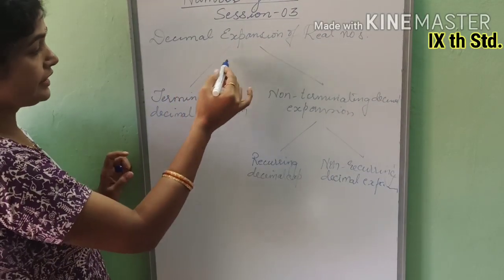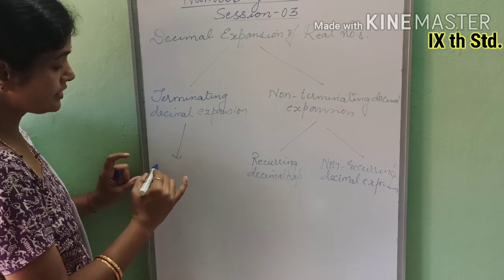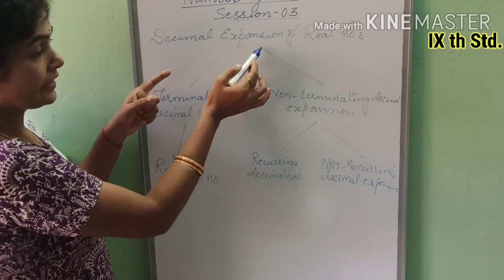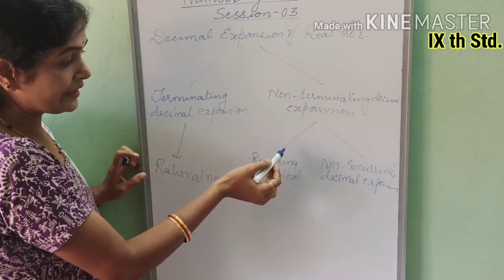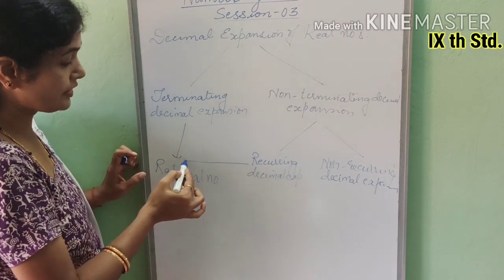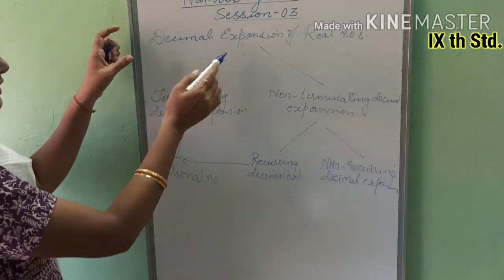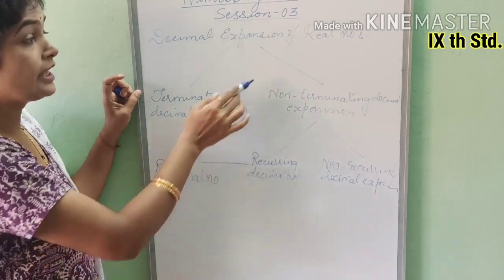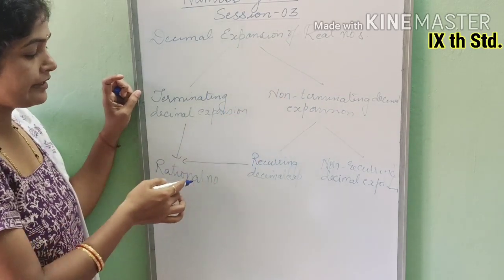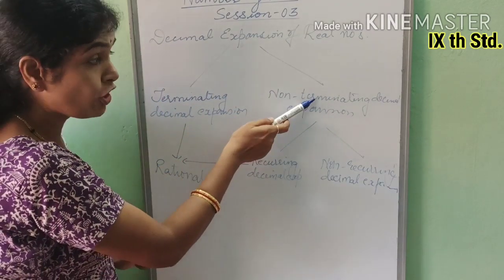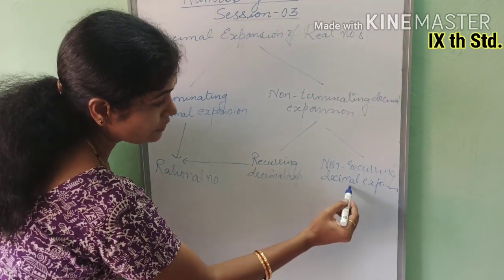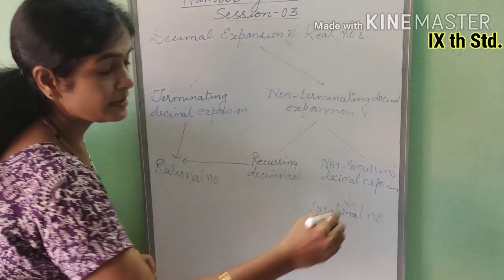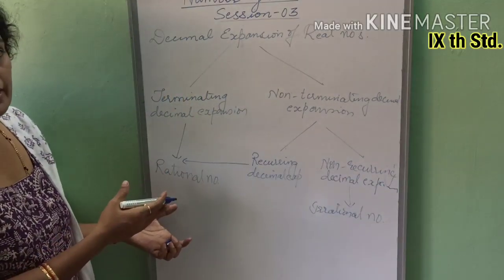If a real number is terminating, then it is a rational number. If a real number is non-terminating and it has a recurring decimal expansion, then also we can say it is a rational number. If it is non-terminating and non-recurring, then that number is an irrational number. This is what we have learned — this is another way of defining rational numbers.